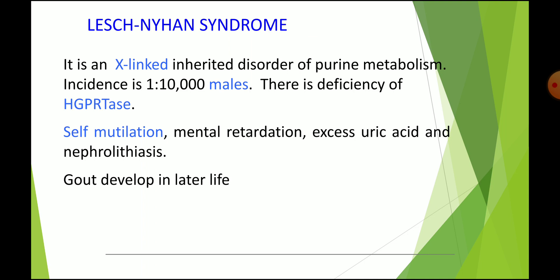An important inborn error of metabolism occurs when salvage pathway enzymes are deficient. Complete absence of HGPRTase leads to a condition known as Lesch-Nyhan syndrome, an X-linked inherited disorder of purine metabolism. Incidence is 1 in 10,000 in males. Symptoms include self-mutilation, mental retardation, excessive uric acid, and nephrolithiasis, because the brain is exclusively dependent on the salvage pathway for synthesis of purine nucleotides.